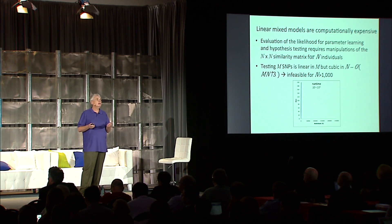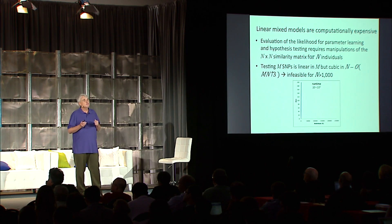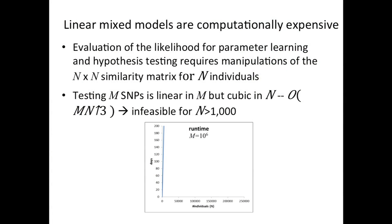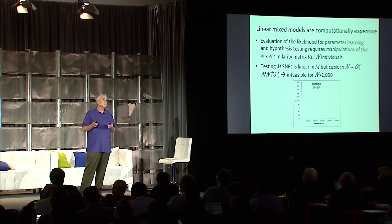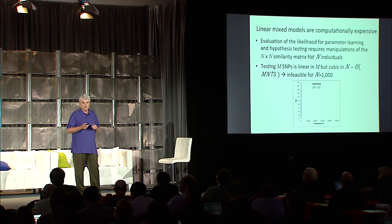Linear mixed models work great at correcting for confounding, but there's a catch — they're very computationally expensive. You have this n-by-n similarity matrix that you have to deal with, and the computations end up scaling cubically in the number of individuals. So if you were to double the size of your data set, the runtime would go up by a factor of eight. For any realistic association study size data set — for example, if you have a million SNPs — this algorithm is completely infeasible even for a small number of individuals.